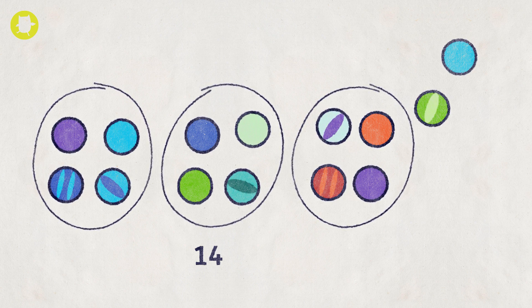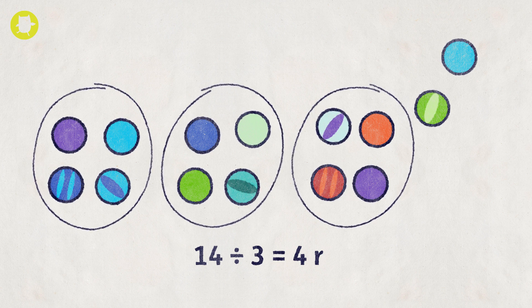So, 14 divided by 3 equals 4 with a remainder of 2.